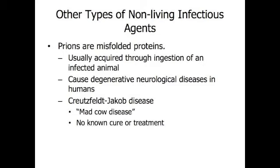Other types of non-living infectious agents include prions and viroids. Prions are misfolded proteins that form plaques and interfere with normal tissue. Usually acquired through ingestion of an infected animal or its body fluids, prions can cause a variety of degenerative neurological diseases in humans and we currently have no effective means of fighting them. One of these, called Creutzfeldt-Jakob disease — sometimes referred to as a human form of mad cow disease — results in dementia, memory loss, and disruption of balance and coordination. Few victims survive more than a year following the appearance of symptoms. Viroids are short segments of single-stranded RNA that can infect plants, often with harmful effects.